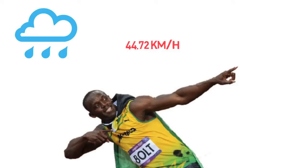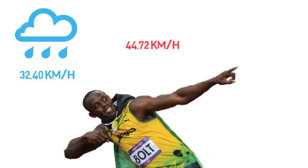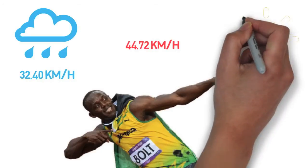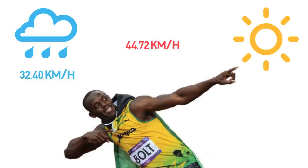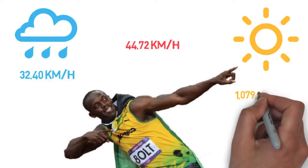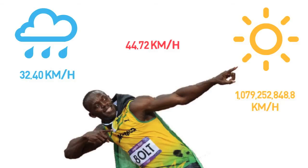This is faster than rain, which average speed is around 32 km per hour, but of course slower than light, which is travelling with constant speed of more than 1 billion km per hour.